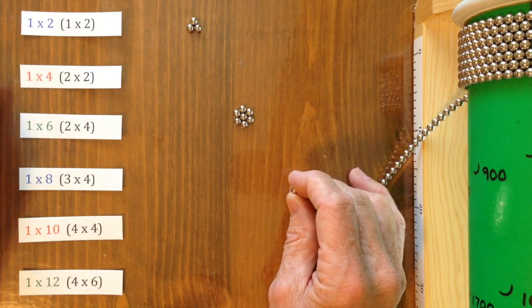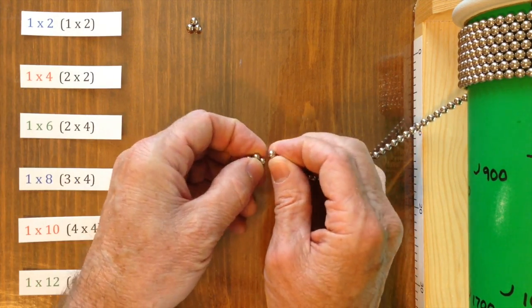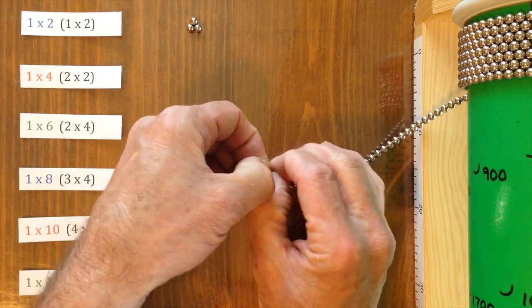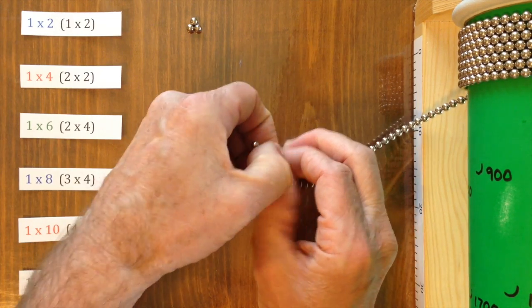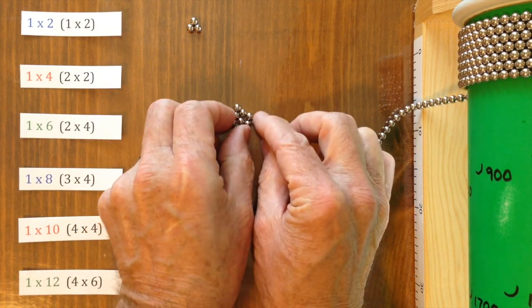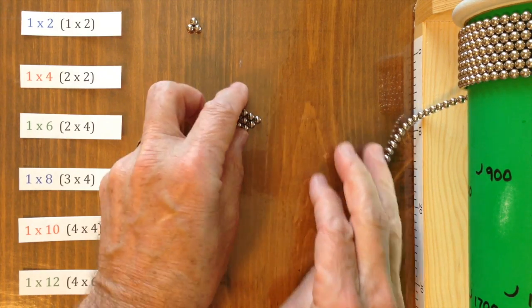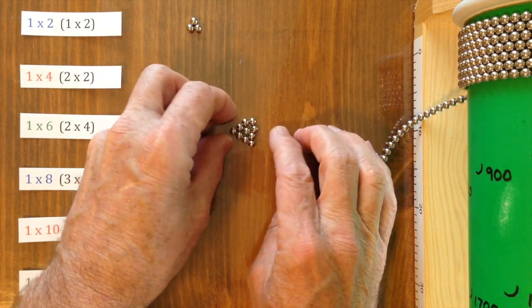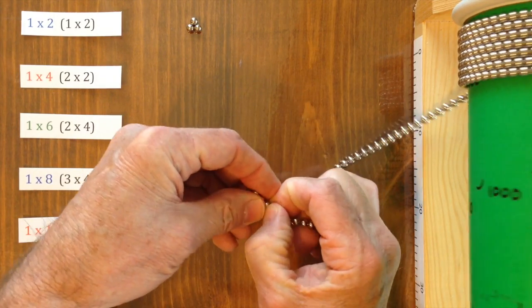Then to make the 1 by 4, later we won't finish the 1 by 4, but later we'll add magnets onto the corners so that you'll have something that is 1 magnet by 4 magnets. But since this is not stable at this point, we'll just add those magnets on later.